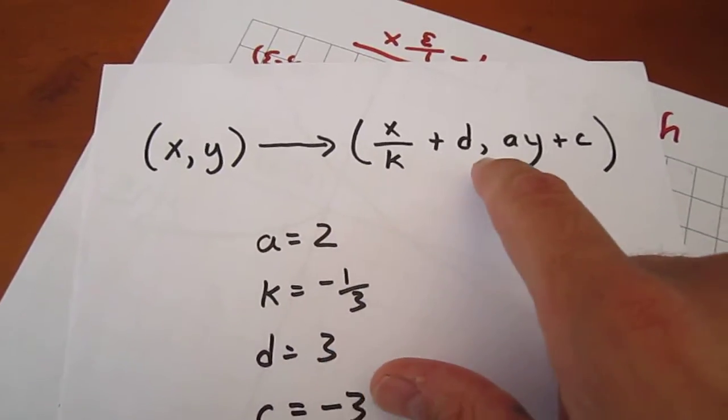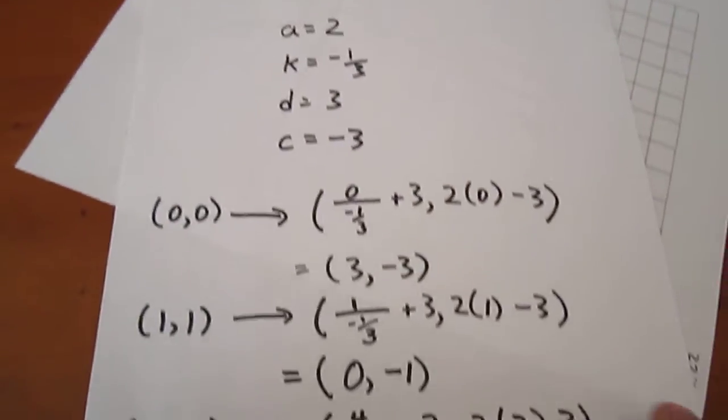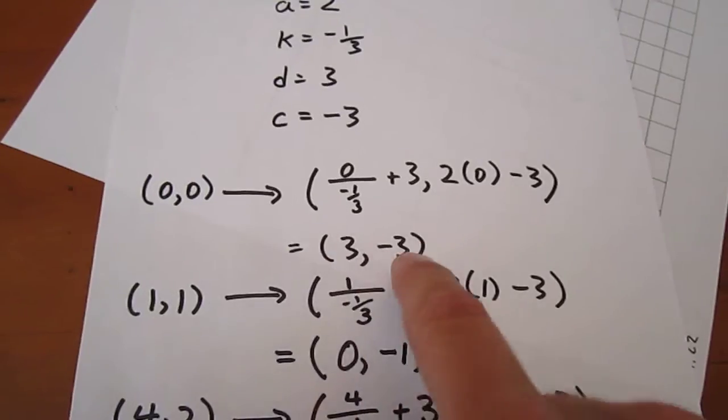Putting in the k, the d, the a, and the c values elsewhere. So we get the images this way. It's kind of a quicker way of dealing with the chart.